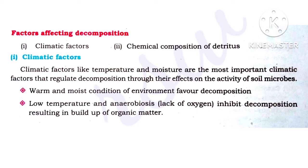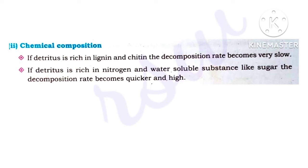Warm and moist environmental conditions favour decomposition. Low temperature and anaerobiosis — i.e., lack of oxygen — inhibit decomposition, resulting in build-up of organic matter. Regarding chemical composition: if detritus is rich in lignin and chitin, the decomposition rate becomes very slow. If detritus is rich in nitrogen and water-soluble substances like sugar, the decomposition rate becomes quicker and higher.